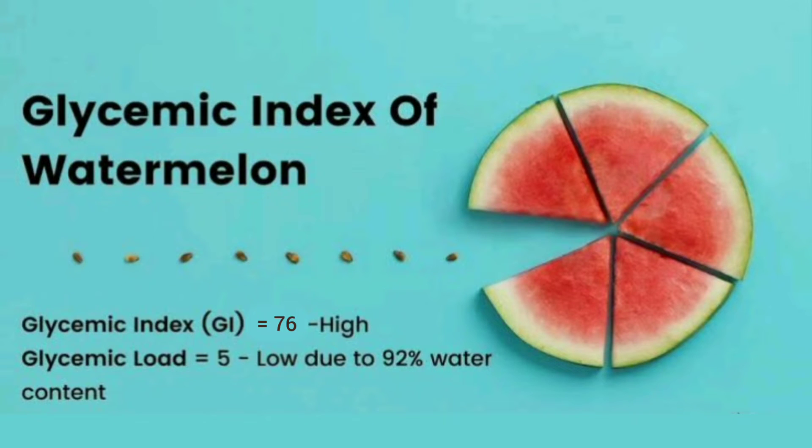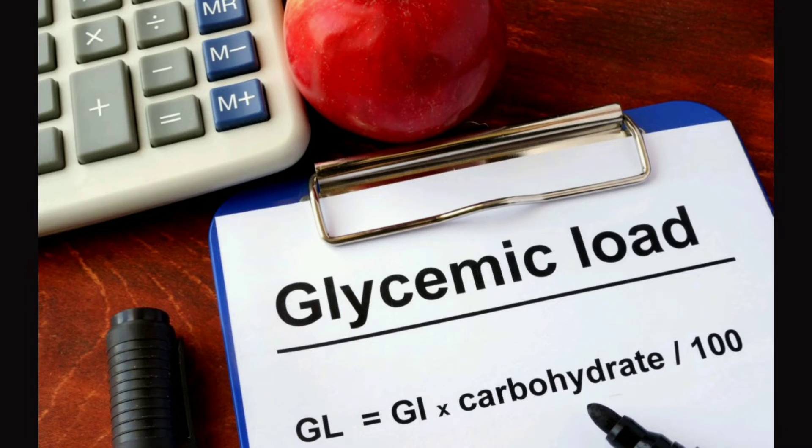Watermelon was mentioned as an example purposely, because it is a food with a high GI but a low glycemic load. As you can see on the screen right now, there is a formula for calculating the glycemic load of foods, which is: dividing the glycemic index of the food by 100 and multiplying it by the carbohydrate content of the food. For example, one cup of watermelon contains approximately 11 grams of carbohydrates.